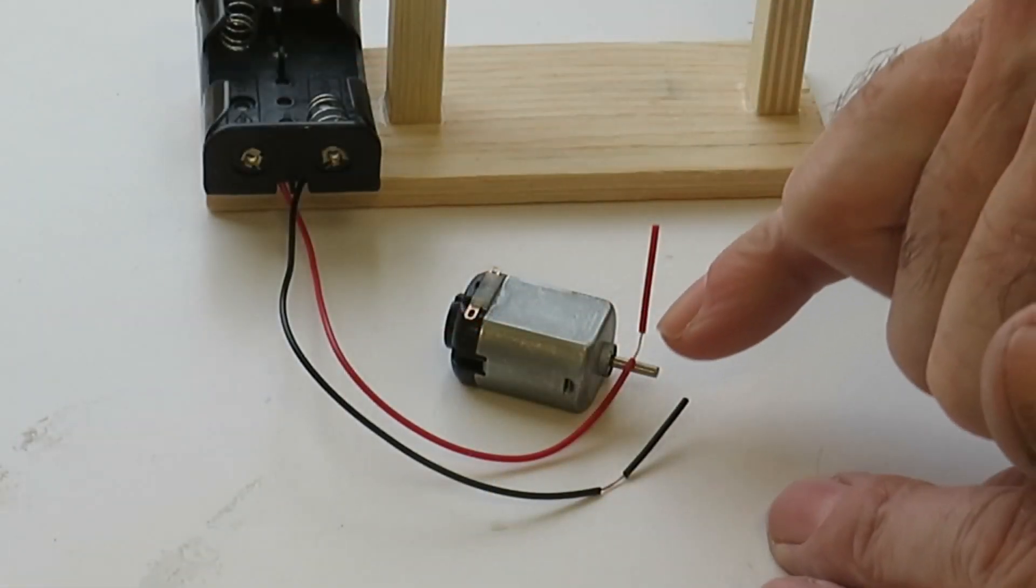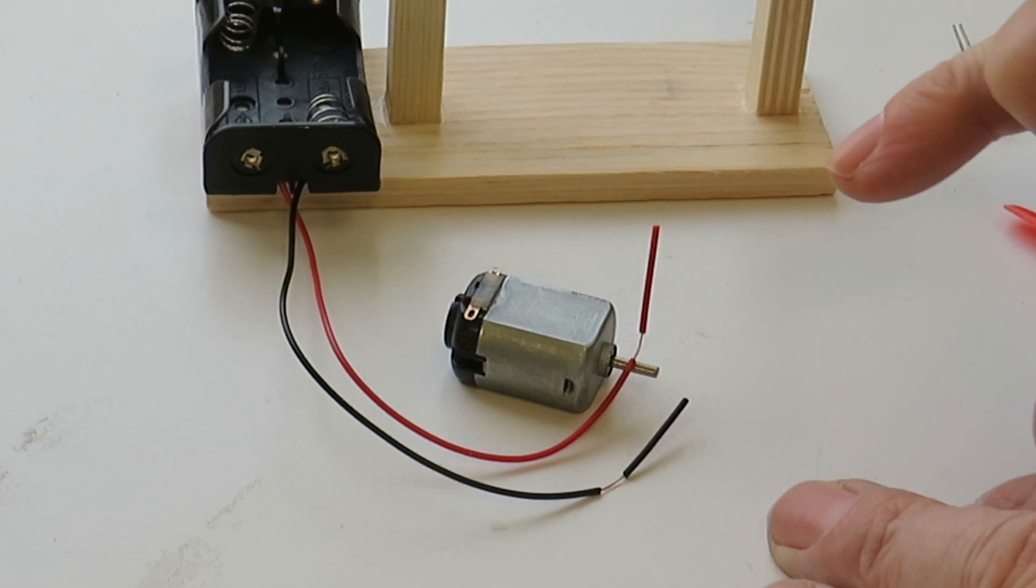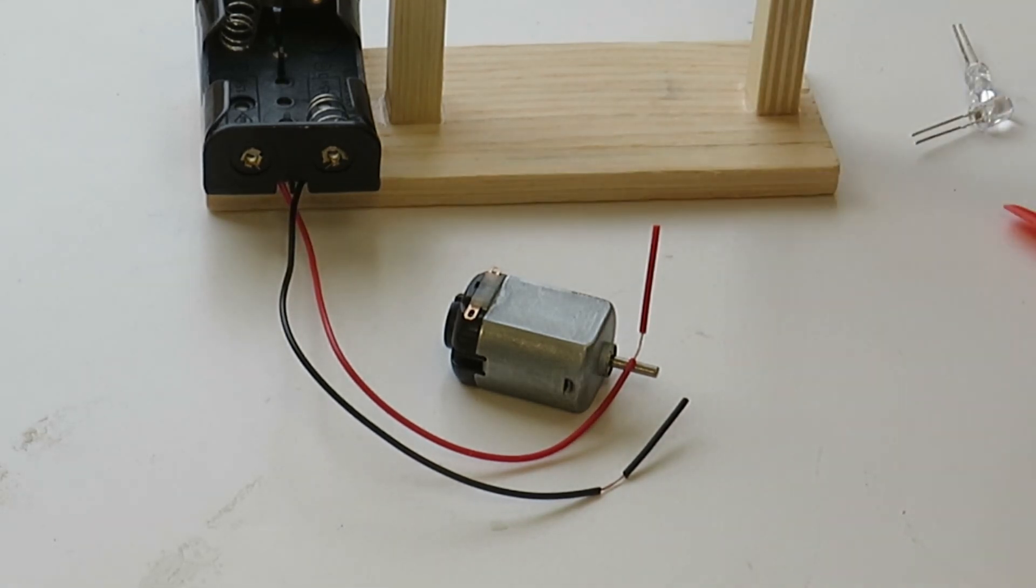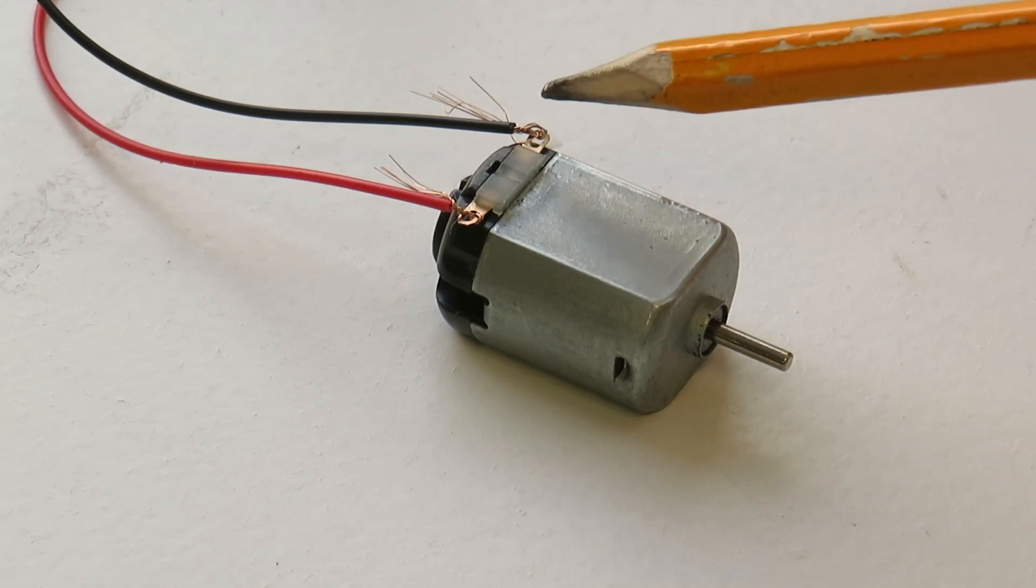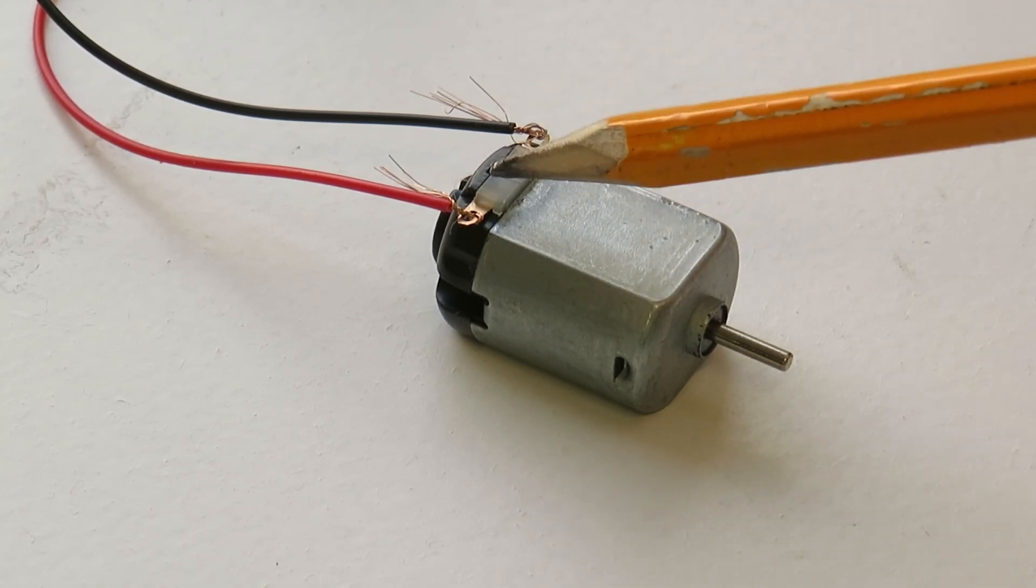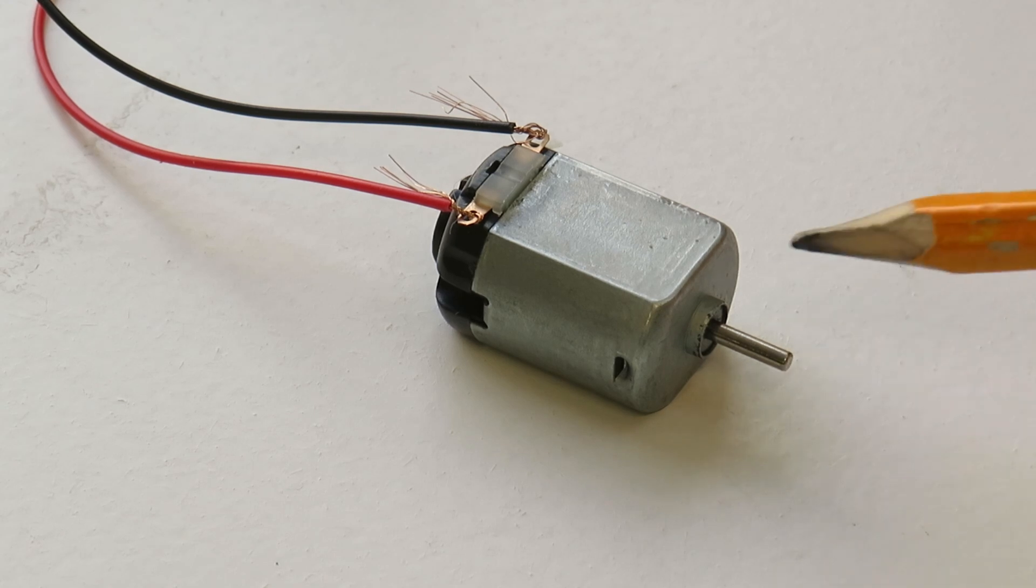Now for the time being I'm just going to push these cables through the holes. I can solder them afterwards but this is just to get the experiment up and running. In case you're wondering, it doesn't matter which way round these cables are attached to the motor. Switching these cables round will just change the direction that the motor operates in.